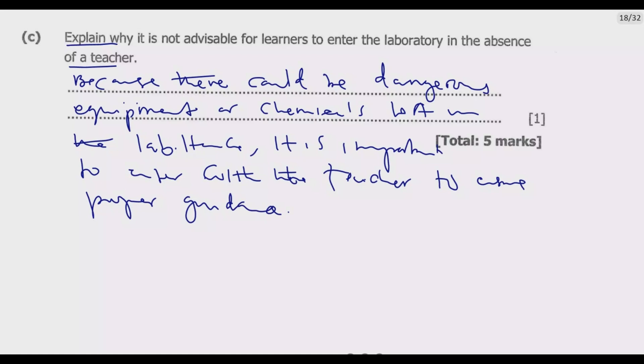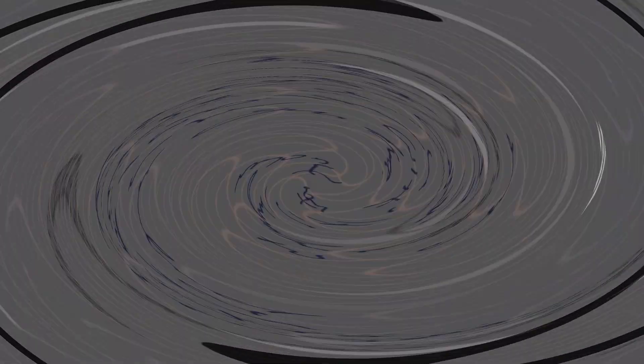This would ensure everyone is kept safe in the lab when there's a staff member who is a teacher. This also helps minimize accidents because there will be proper supervision. In case of an accident in the lab, every pupil will be protected because there's someone to guide them. This is how you answer this question to get full marks. Thank you. Join me in the next episode as we look at question B2.